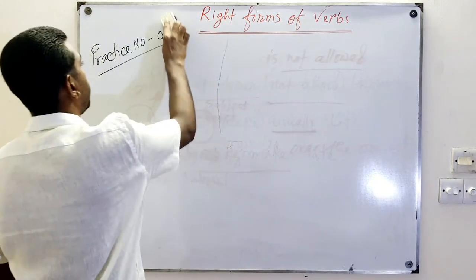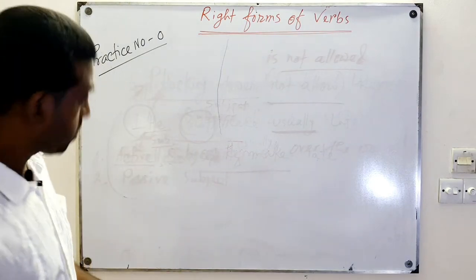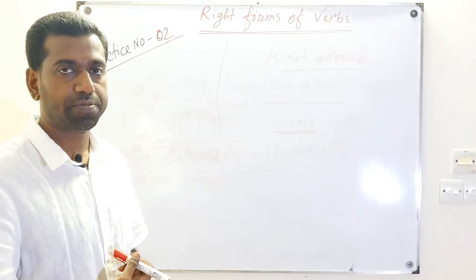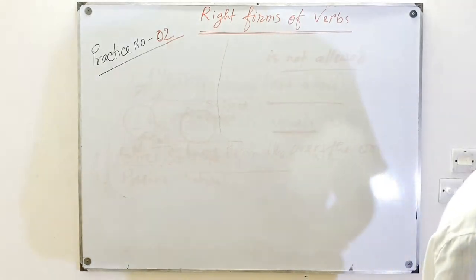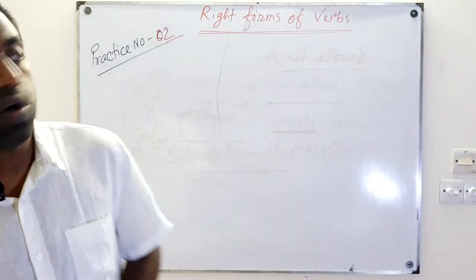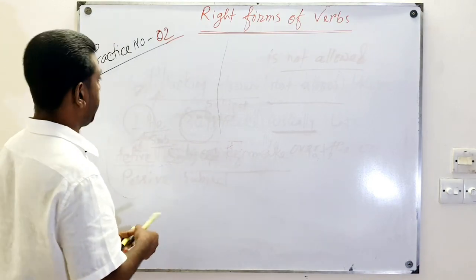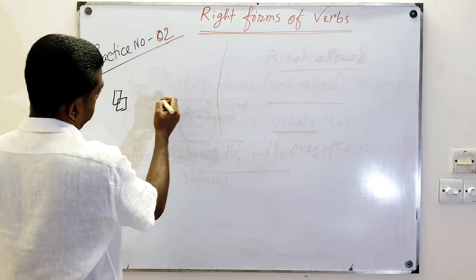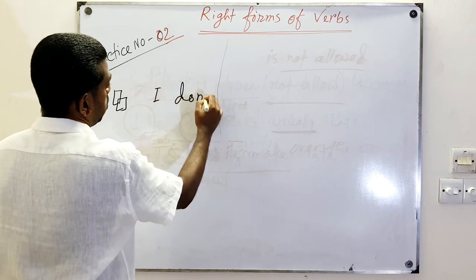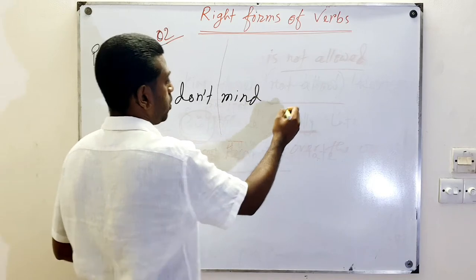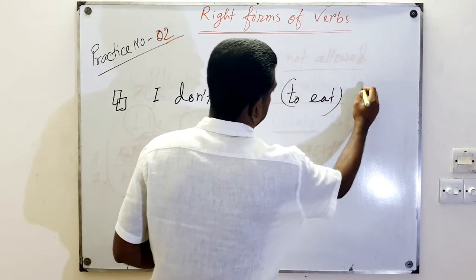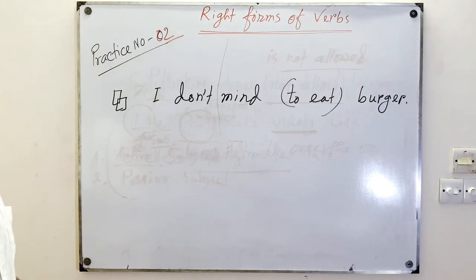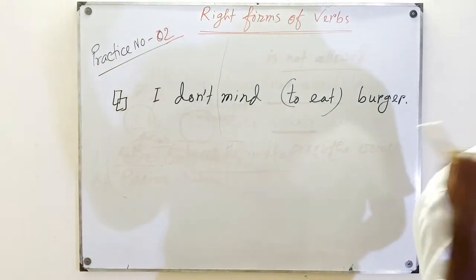Now practice number two. Do you have any idea about gerunds? I think you have a very good idea about gerunds. So practice number two: if I write 'I don't mind to eat burger' — can you correct this statement? Yes, there is a problem here and it's related to a rule. Let's diagnose it.